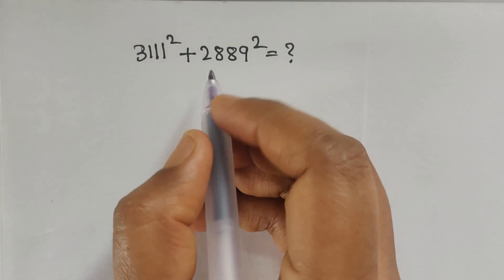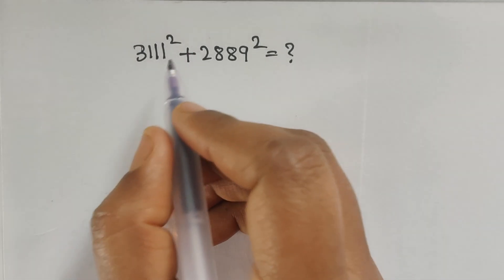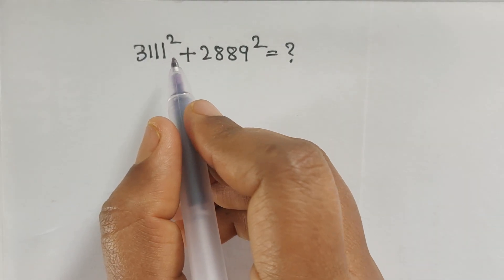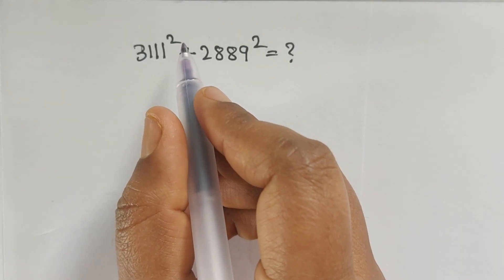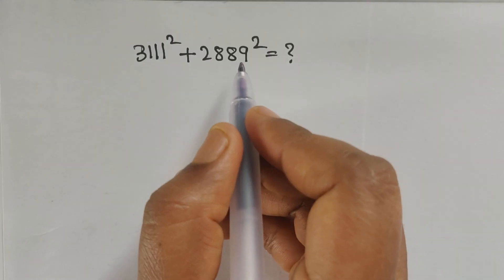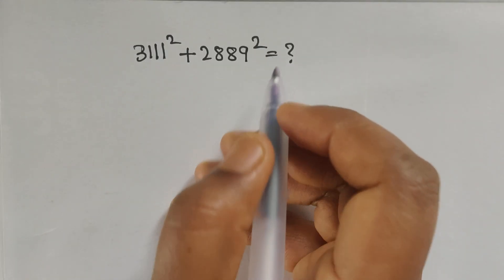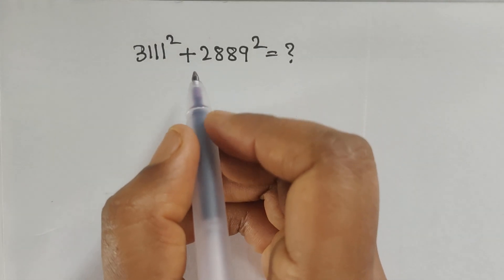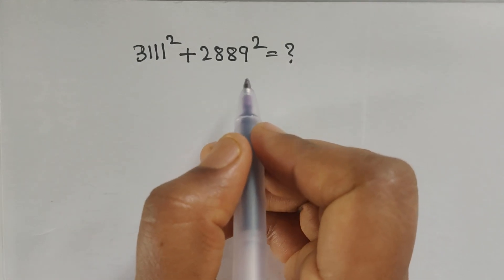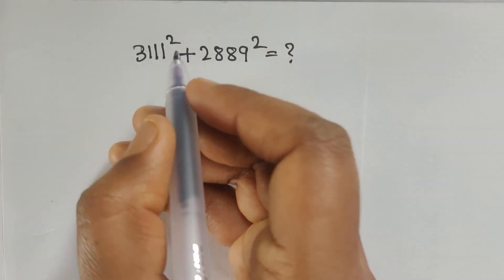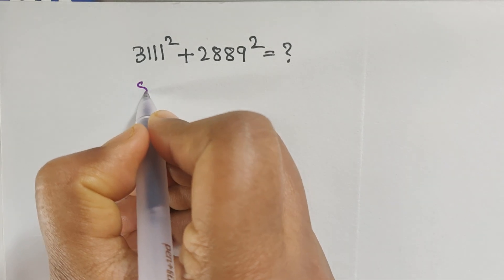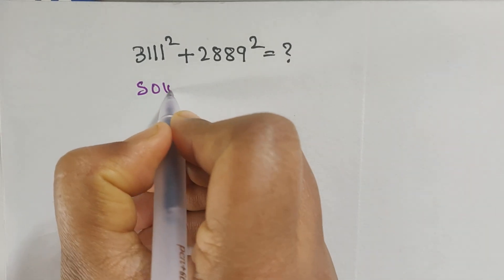Hello everyone, welcome back to our channel. Here we have one problem: 3111 whole square plus 2889 whole square. How do we solve this problem without using a calculator? Let me show you the solution.